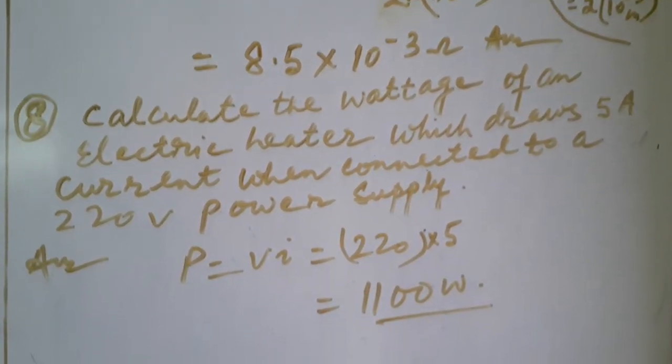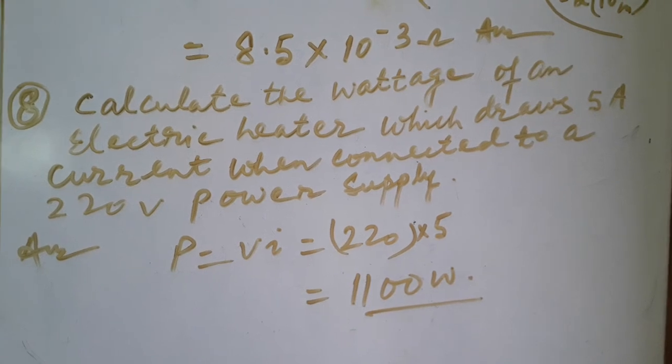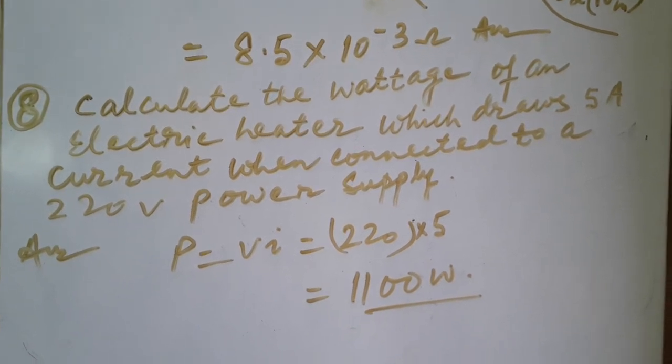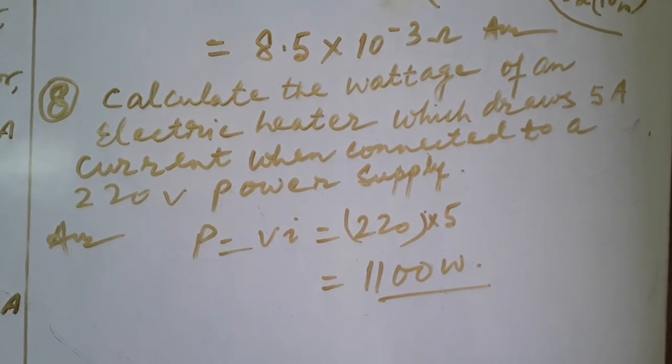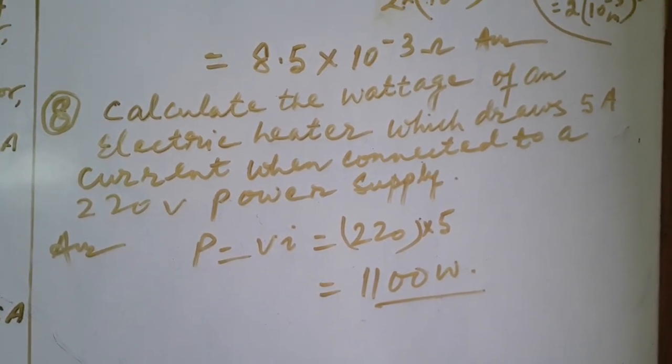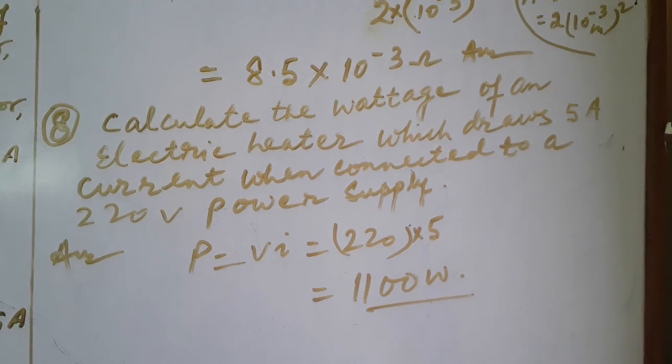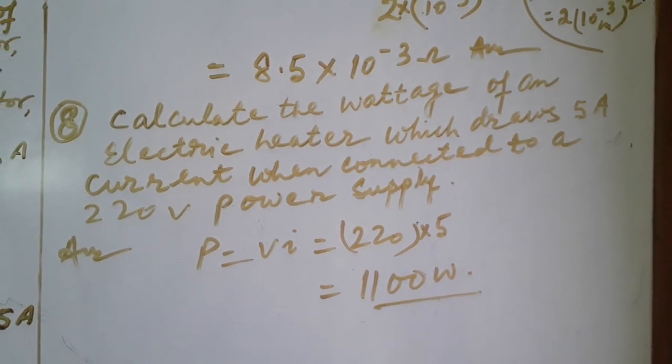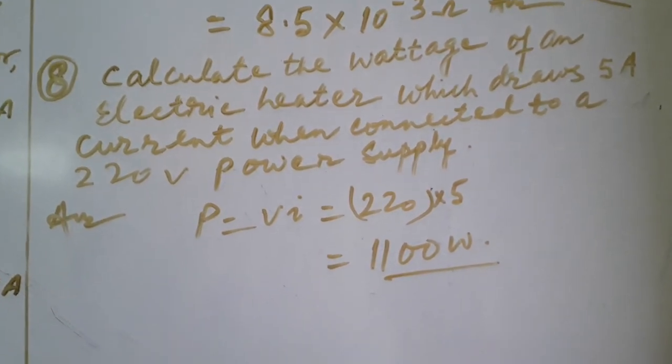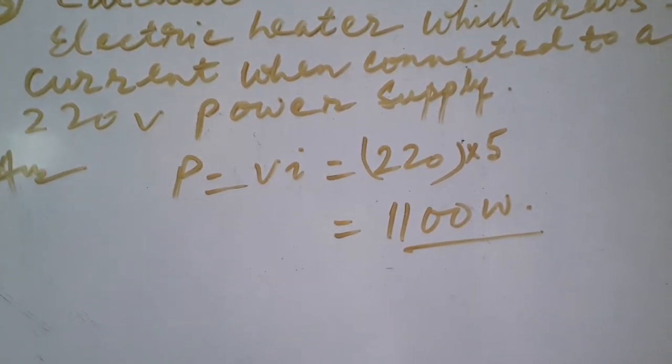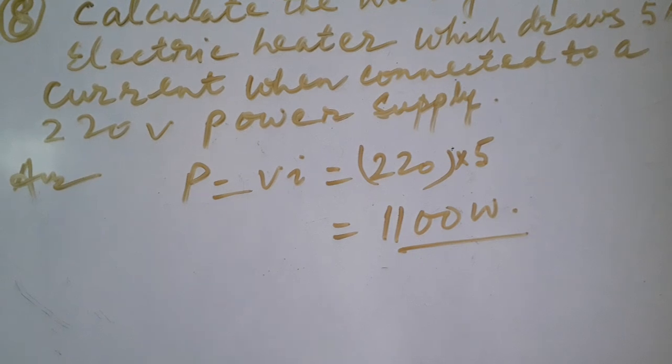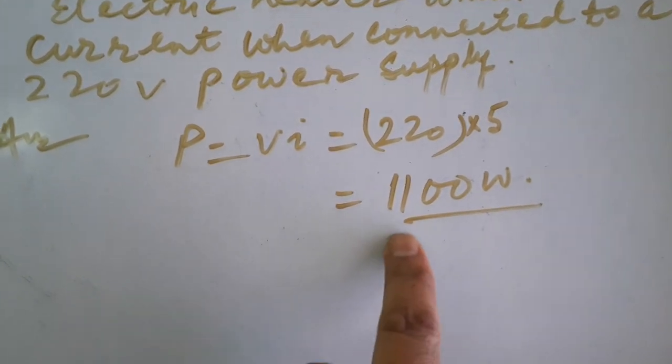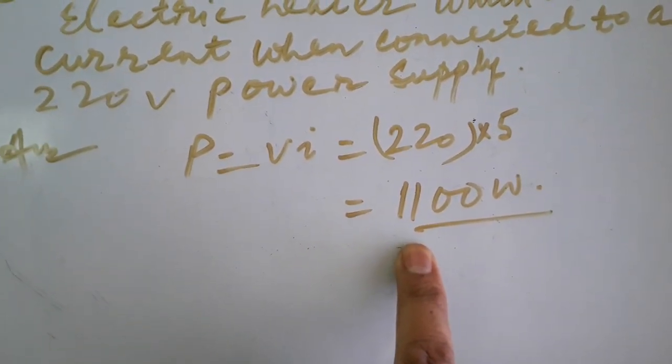In the last question, you will see how to calculate the wattage. In this question, you have to calculate the wattage of an electric heater when it draws 5 ampere current when connected to a 220 volt power supply. Simply you can use the formula P equal to VI. V is given to you, I is also given, multiply, then you get the answer as 1100 watt.